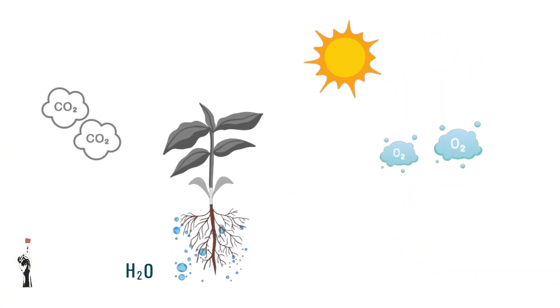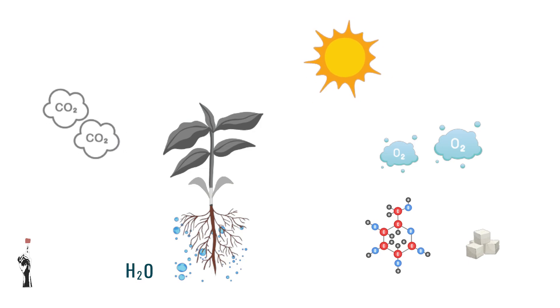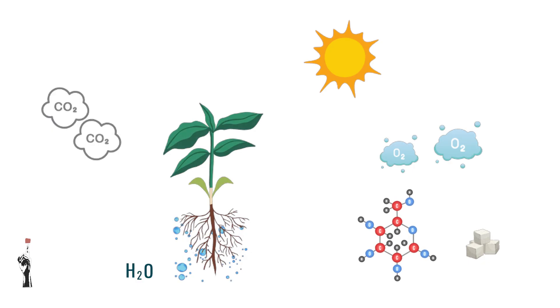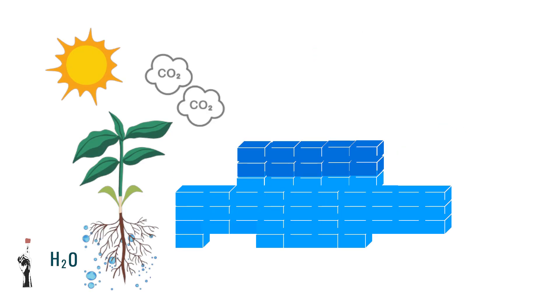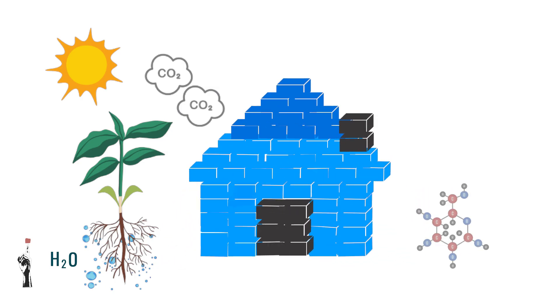Now that you know where photosynthesis takes place in the plant, let's delve into how photosynthesis happens. Here is a diagram representing the process of photosynthesis. For this reaction to occur, sunlight, carbon dioxide, water, and chlorophyll are necessary to produce the products glucose and oxygen. During this chemical reaction, building blocks from the compounds required are rearranged to form new compounds such as glucose and oxygen.